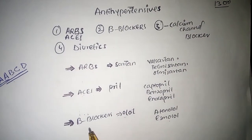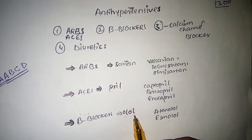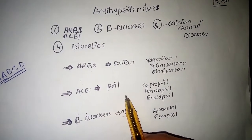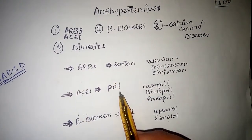Beta blockers have olol at the end, ACE inhibitors have pril at the end, while ARBs have sartan at the end.